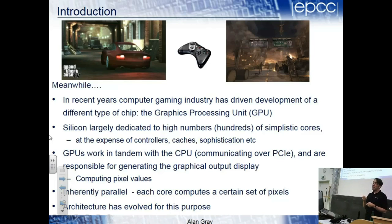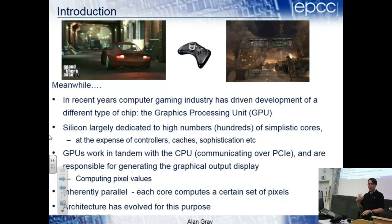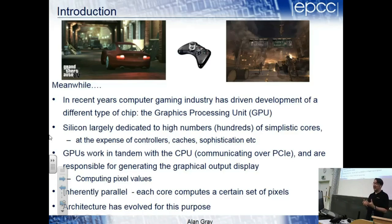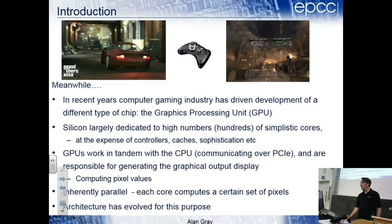Alongside that, people were wanting to do more and more realistic gaming. The gaming industry was independently developing chips for graphics processing - GPUs. Doing graphics is quite a specialized task, so although developing a chip is incredibly expensive, it was worth it for companies to develop their own GPUs. The silicon in these chips was largely devoted to high numbers of simple cores designed for graphics, with the sophistication of a normal CPU left aside.